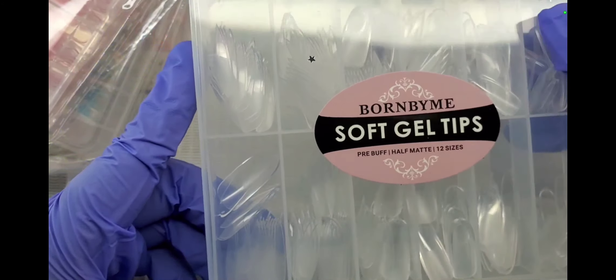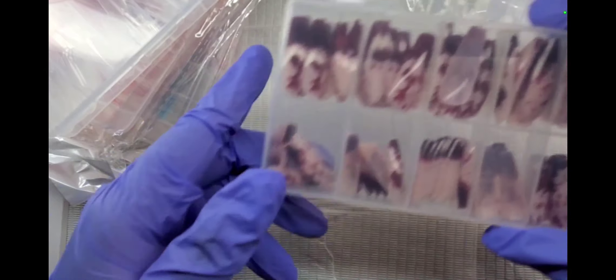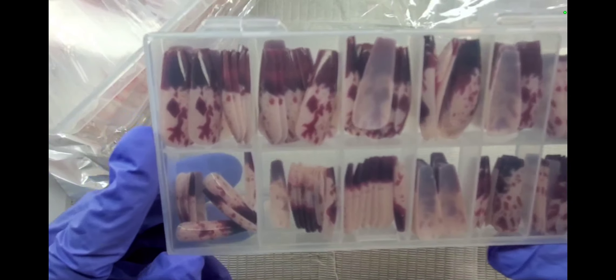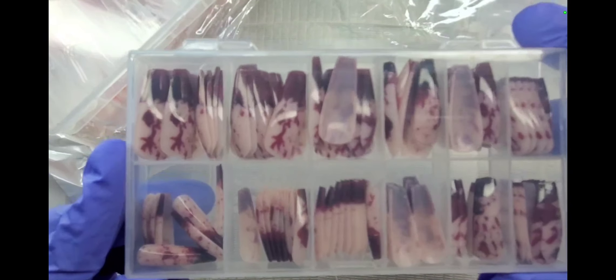I also got these oval shaped ones. I will link everything down below and then these Halloween ones which I love. I am going to be using these in a set, my second set that I'm going to be doing I think tomorrow, and white French tips, full cover though.